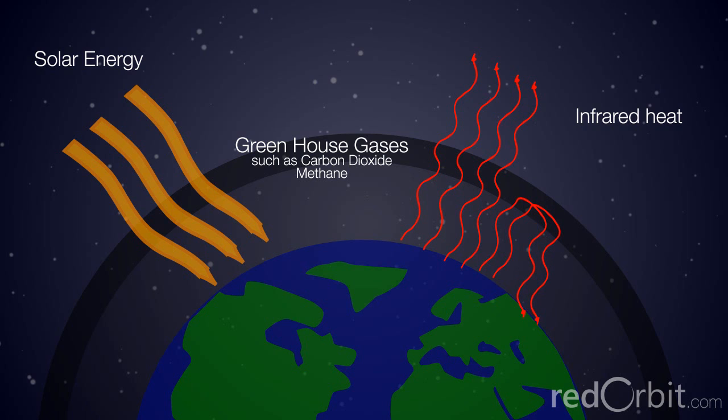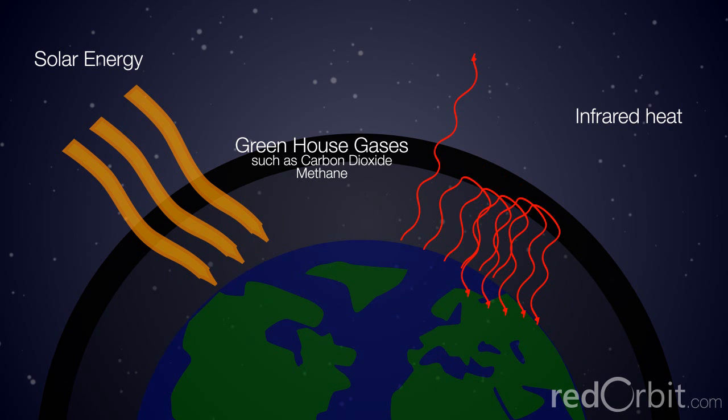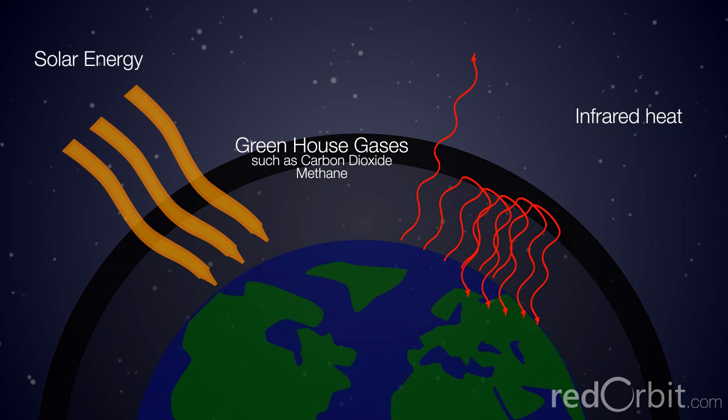At a certain temperature, these processes are in equilibrium and the surface temperature of the Earth is stable. However, if more greenhouse gases are put in the atmosphere, the amount of trapped terrestrial radiation increases, leading to an increase in global temperature.